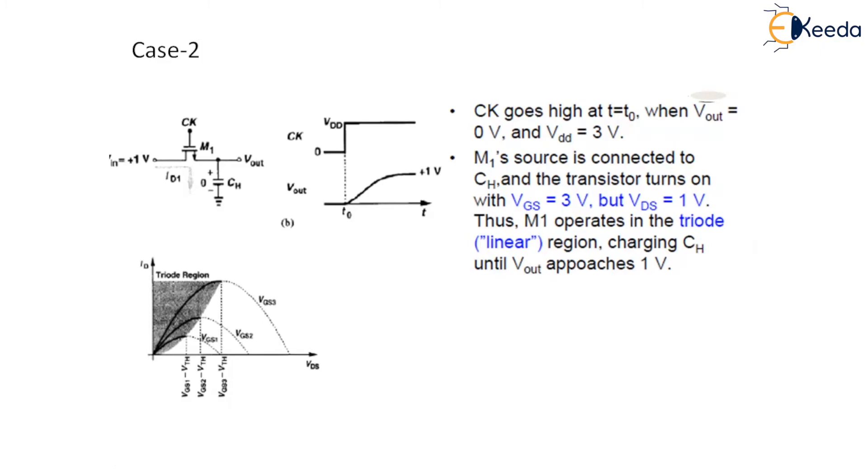Now this M1 is connected to the transistor and the transistor turns on with Vgs equal to 3 volt and Vds is 1 volt. Thus, M1 operates in the triode region. You know the condition for triode: Vds should be less than Vgs minus VTH and this condition is satisfied. Now this charges CH, the capacitor, until Vout approaches positive 1 volt. And for Vout equals to 1 volt, M1 exhibits an on resistance of Ron equals to 1 upon μn Cox W by L VDD minus Vin minus VT. So this is another case.